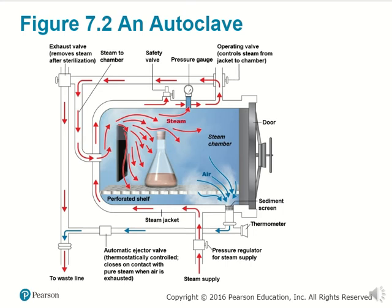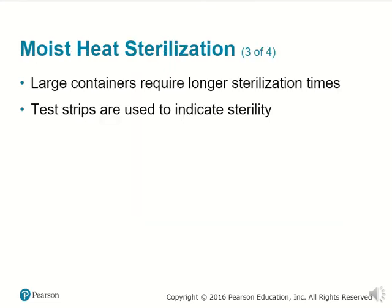Perforated shelves are used for storing solutions or glassware that's going to be disinfected, allowing heat to pass under those glasswares. The larger the container, the longer it takes to sterilize the entire surface. Test strips are used to indicate sterility — when the surface has been heated long enough, the tape will change or reveal certain lines, confirming that the surface heated properly to kill off the microbes.